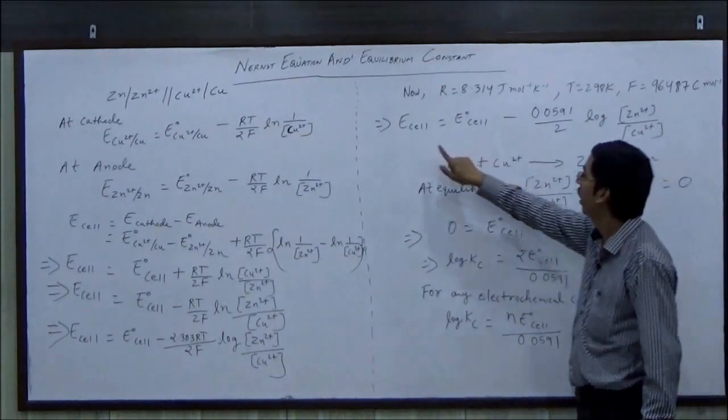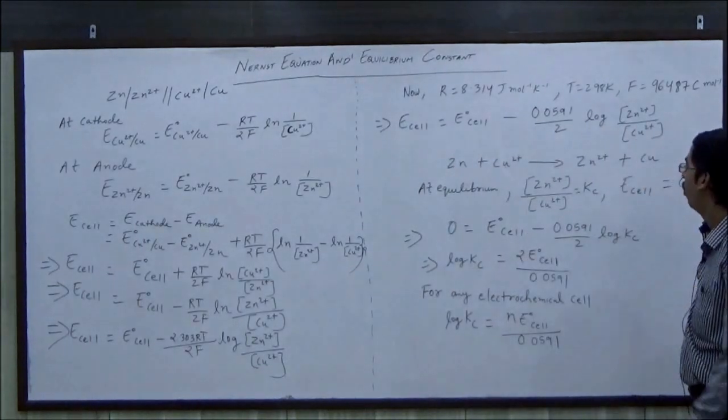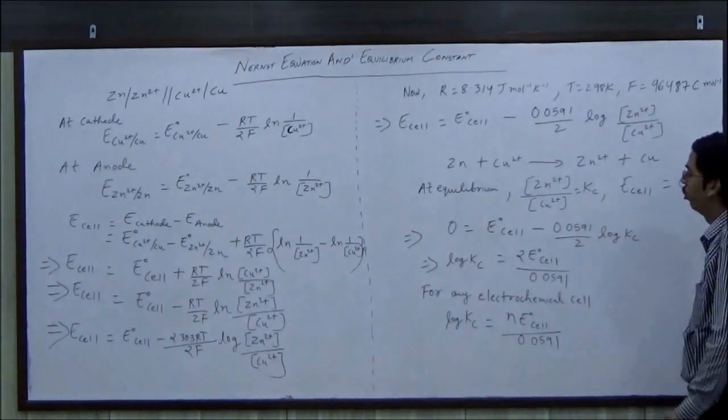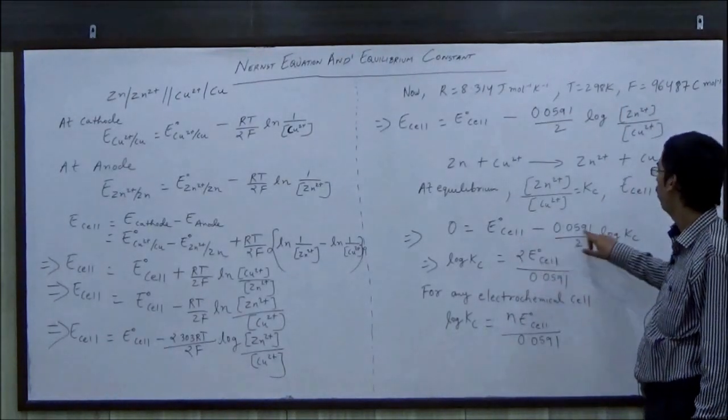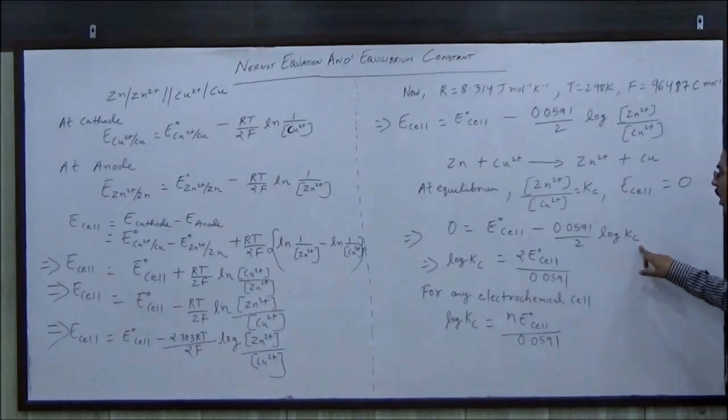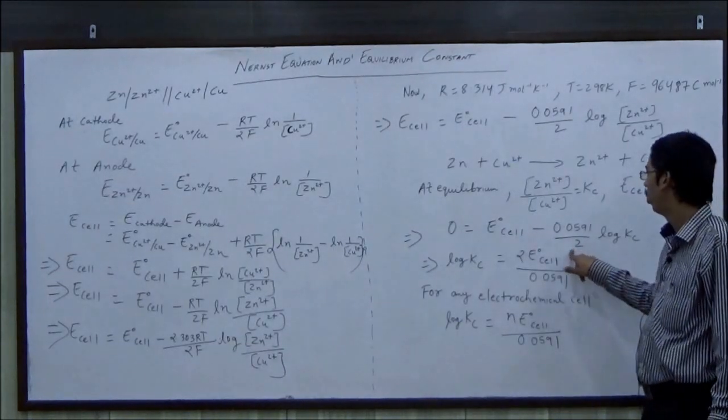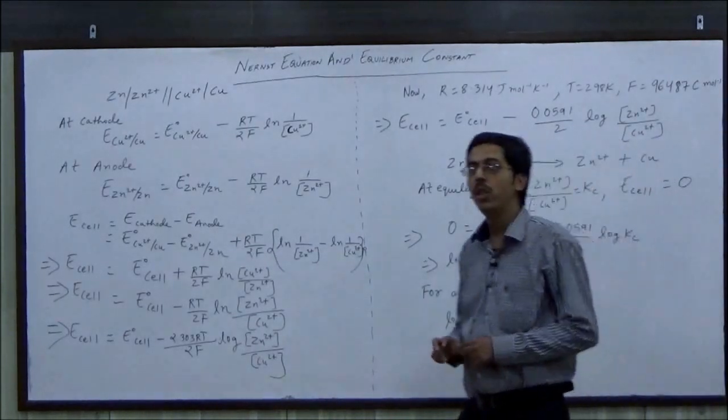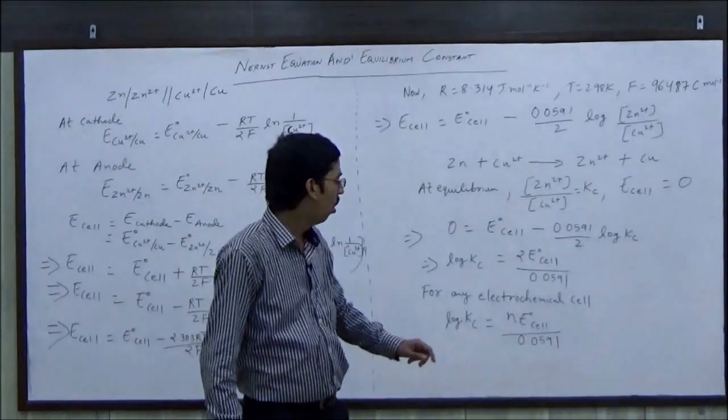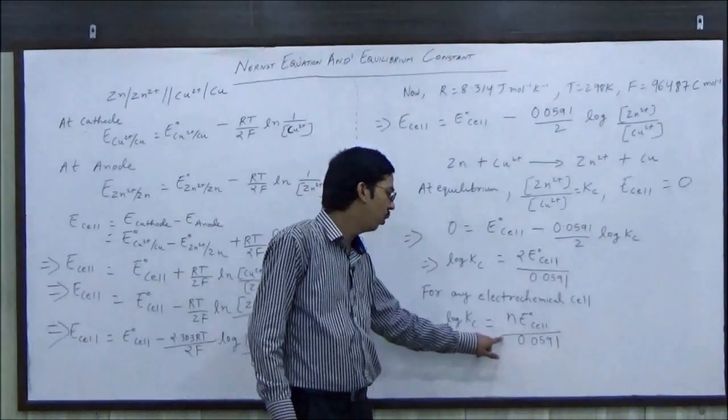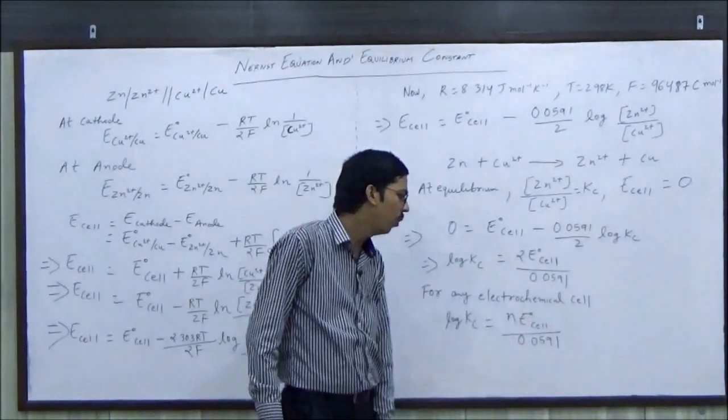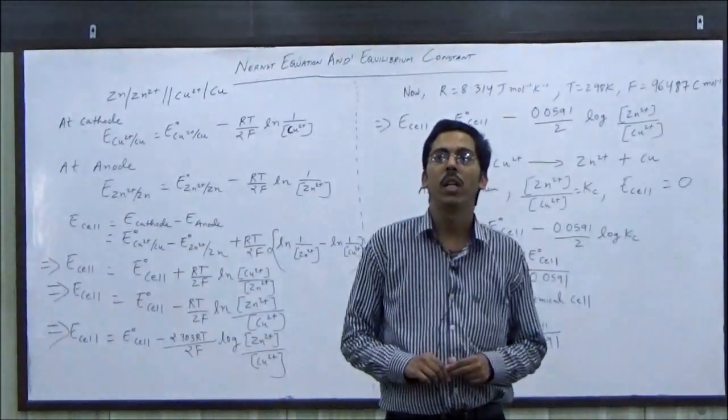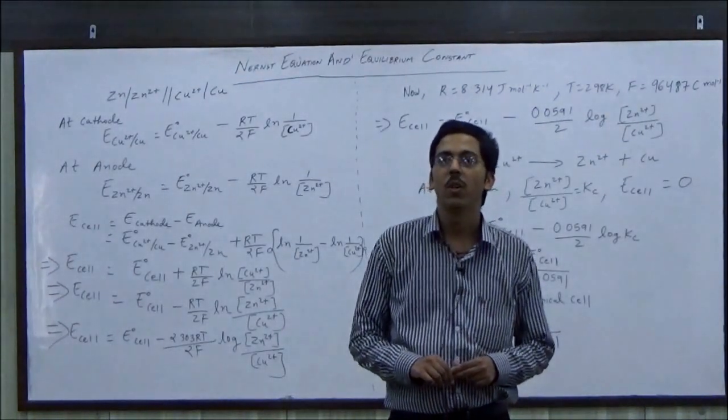And at equilibrium, we know that E cell is equal to 0. So we put the value E cell is equal to 0 in this expression. So 0 is equal to E0 cell minus 0.059 1 upon 2 log Kc, which implies that log Kc is equal to 2 into E0 cell upon 0.059. For any general electrochemical cell, log Kc is equal to n E0 cell upon 0.059. Here n is the total number of moles of electrons which gets cancelled during the electrochemical cell reaction.